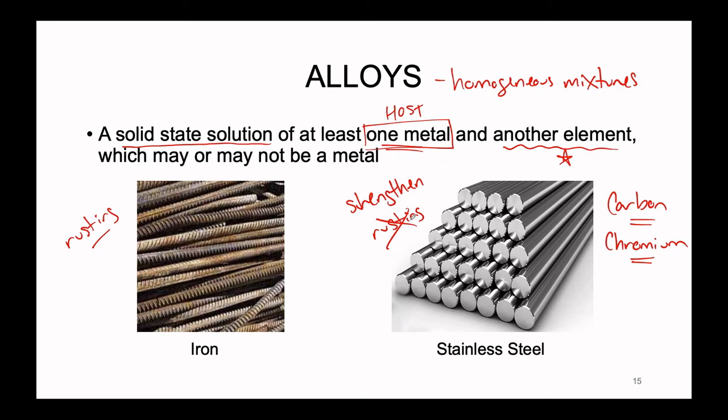Over time, stainless steel can rust, but it's not as likely to happen, especially spontaneously. We kind of have to let an extreme amount of time pass or introduce stainless steel to more extreme environmental conditions to get it to start to rust. This is why we use stainless steel in things like building construction and the construction of cars — it's much more reinforced and therefore the structures we build will be more protected.